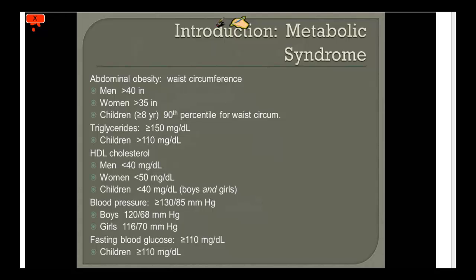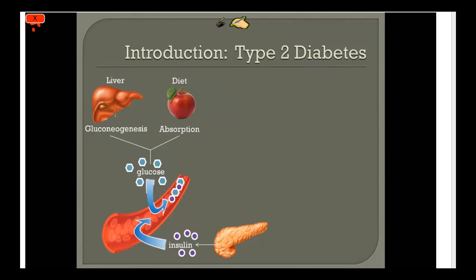Metabolic syndrome is a constellation of findings in a patient. There are five different criteria: abdominal obesity measured by waist circumference, triglycerides above 150, low HDL cholesterol, high blood pressure above 130 over 85, and elevated fasting blood glucose. If you meet three out of the five criteria, that's considered metabolic syndrome. We classify these patients because, compared to the healthy population, they are at increased risk for coronary artery disease and diabetes.